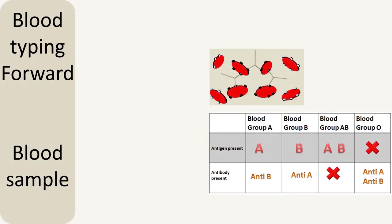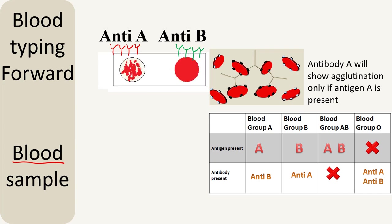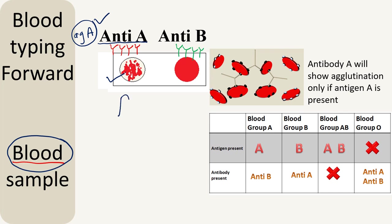Now let's understand forward blood typing, wherein we use the blood sample of the individual to determine the blood group. Once you take blood from a person, you add two droplets of blood on a slide. Onto these two droplets, you will add antibody A on one droplet and antibody B on another droplet, and you will check for agglutination. Antibody A will only agglutinate in the presence of antigen A. Since we see agglutination, we can assume that this blood sample contains antigen A. So now we know that this person has antigen A in the blood.